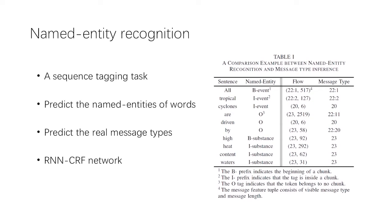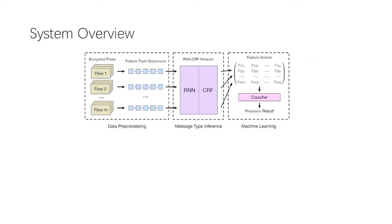A common method to solve the NER problem is adopting a recurrent neural network conditional random field (RNN-CRF) network, where RNN encodes sequential words to predict named entity probability distribution at word level, and CRF integrates neighbor tag information at sentence level. In this work, we propose a mobile encrypted traffic classification approach for TLS 1.3 based on message type inference. Our system consists of three modules: data preprocessing, message type inference, and machine learning.